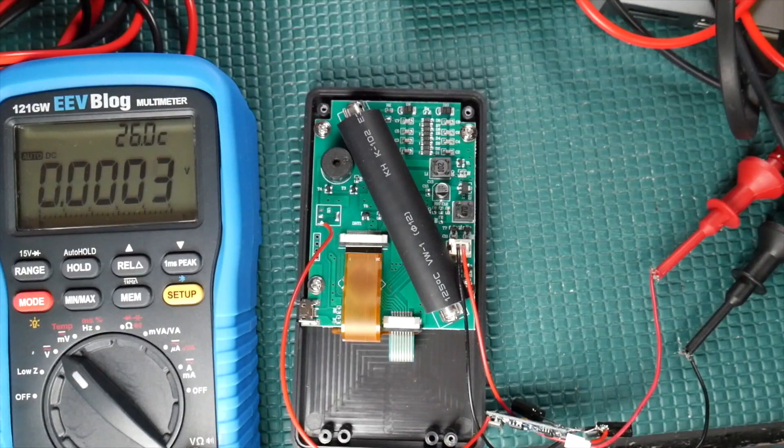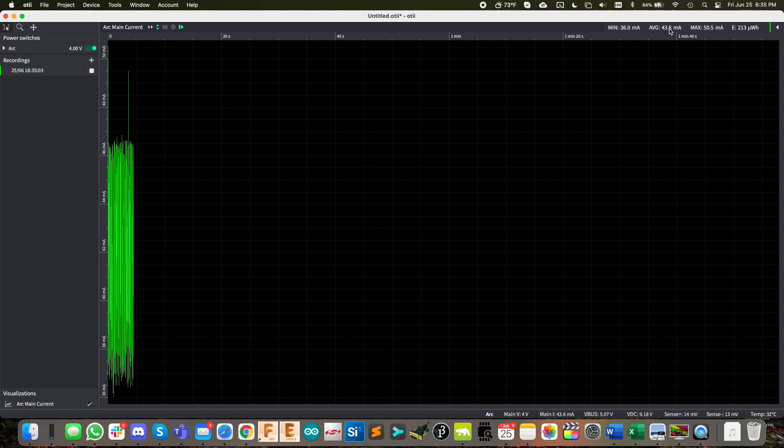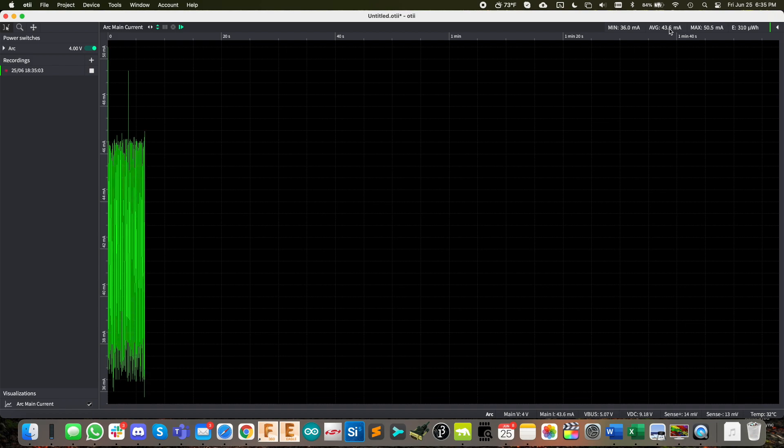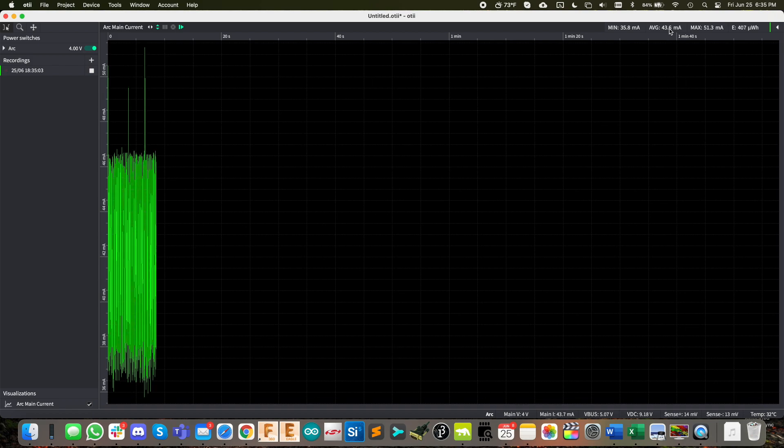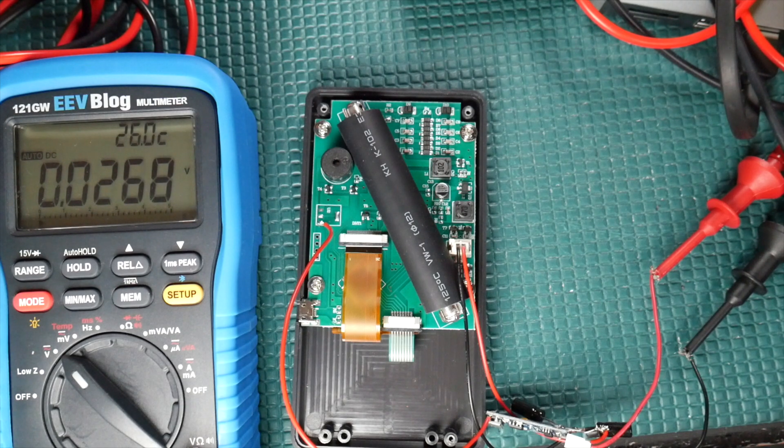And just to get an idea what the current draw is here from the battery. Okay, start a new plot for that. And there you see, it's about 45 or so milliamps. So again, with the MCP 1702, it can handle about 250 milliamps, that's not going to be a big deal at all. So let me button all this up. And then I'll draw the schematic out for you just for reference.